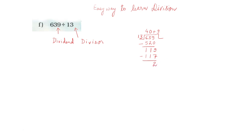So what's the answer I am getting over here? I am getting 2 and this 2 is your remainder. And here your quotient is 40 plus 9 is 49.